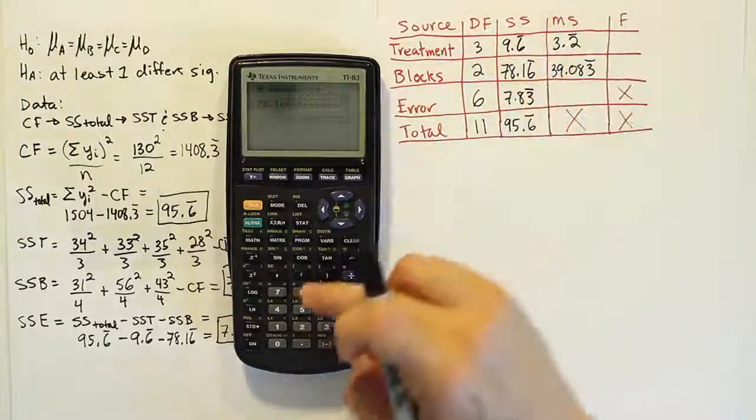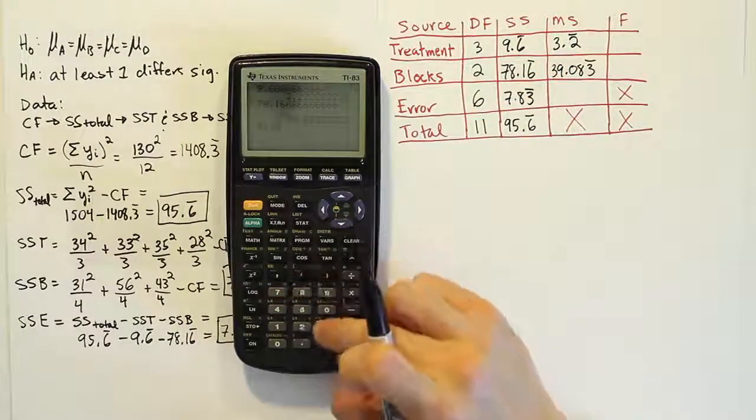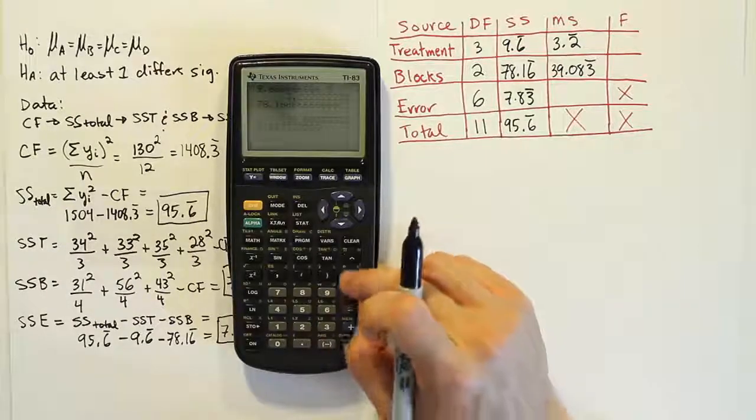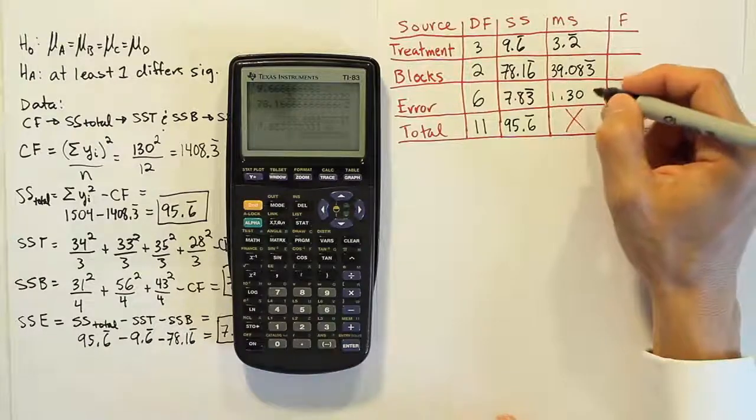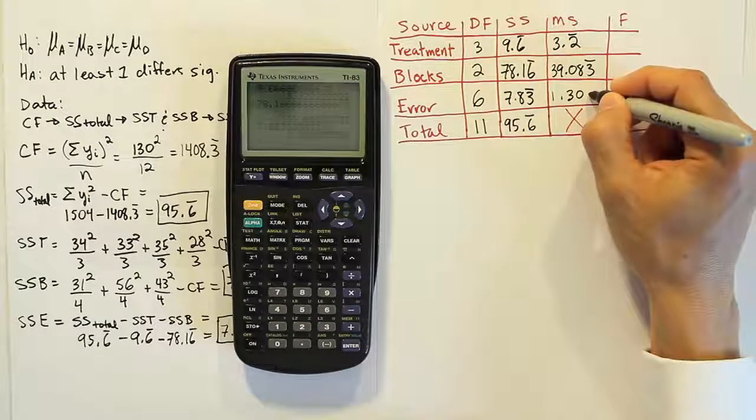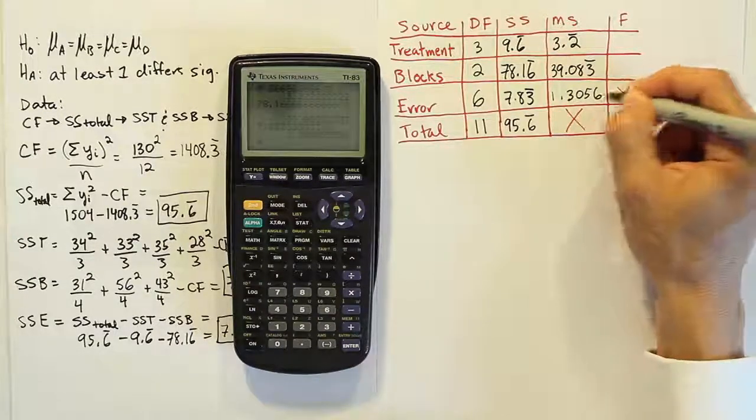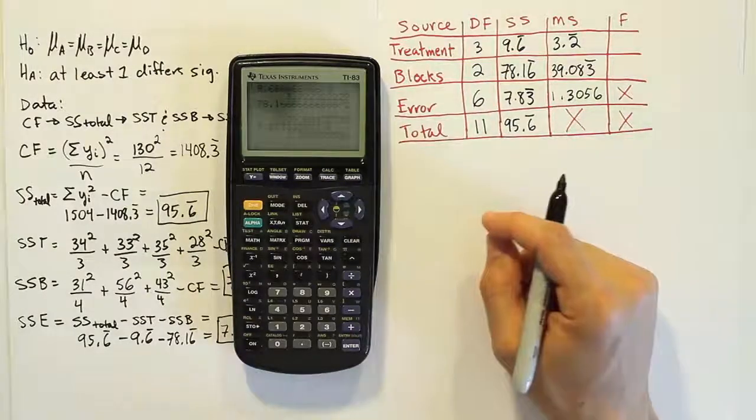Then we'll do 7.83 repeating divided by 6. And we end up with 1.30, let's just call it 1.3056 just to give us some decimal places.